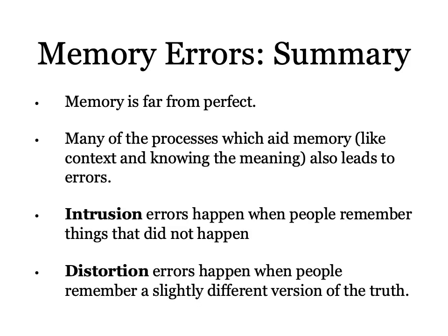Your memory is far from perfect, and this is a message running through these lectures on memory. It's not designed to be perfect — it's designed to generalize and stretch the truth a little so you can learn new things. Some processes that aid memory, like context and elaborative encoding, can also lead to errors. Thinking about what a word means allows you to remember it better, but seeing semantically related words can lead to errors in the DRM paradigm. Intrusion errors happen when people remember things that didn't happen at all, and distortion errors happen when people remember a slightly different version of the truth.